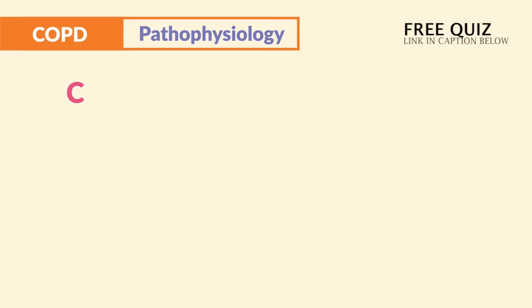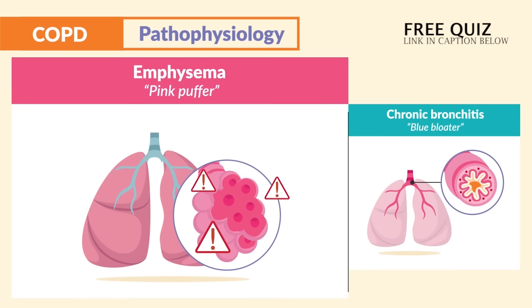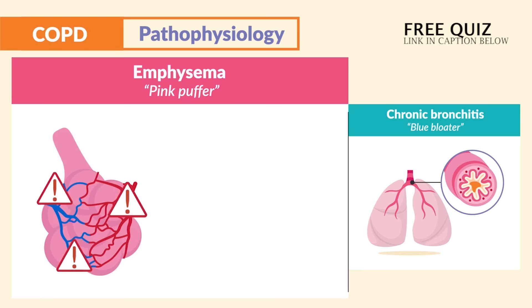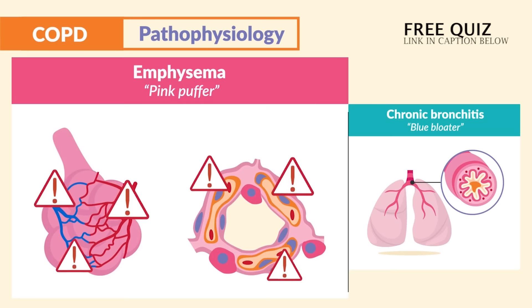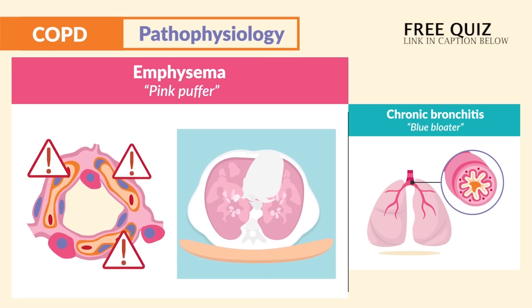Think C in COPD as C for chronic air trapping and lung hyperinflation, because air cannot get out of the lungs. For emphysema, or the pink puffer, these clients are typically well perfused — they're pink — but they have difficulty breathing, so just think 'puffer.' This results from damage to the alveoli, causing loss of lung elasticity and loss of surfactant that helps the lungs stretch, leading to air trapping inside the lungs.